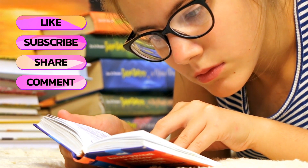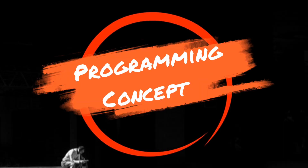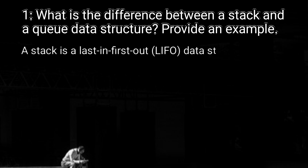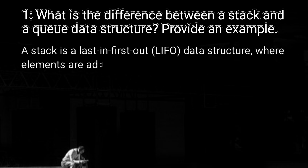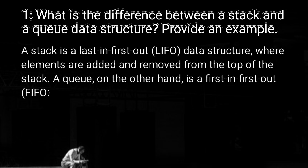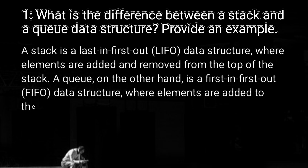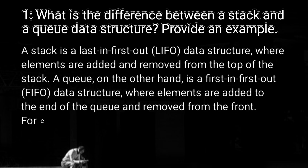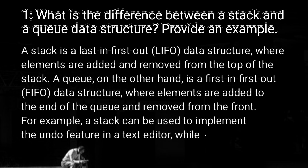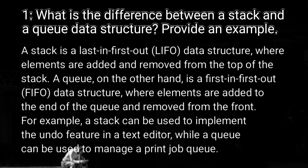Let's get started. Moving on to the first section: programming concepts. What is the difference between a stack and a queue data structure? A stack is a last-in first-out data structure where elements are added and removed from the top. A queue is a first-in first-out data structure where elements are added to the end and removed from the front. For example, a stack can be used to implement the undo feature in a text editor, while a queue can be used to manage a print job queue.